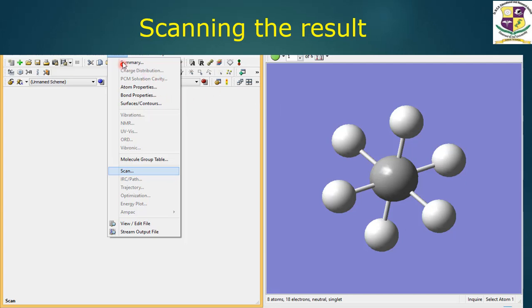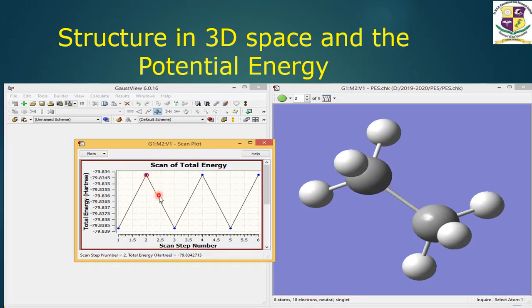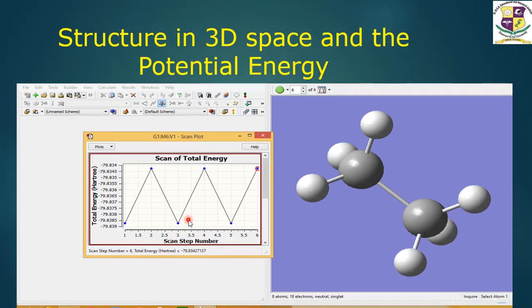To scan the structure, to get the energy we have to go for the scan option. There is a result column in the menu bar - go to results, under result you can go for scan. Click scan. You are here with the scan total energy. These steps you can see here under various potential energy - the shape of the molecule keeps changing and the energy also keeps on changing.